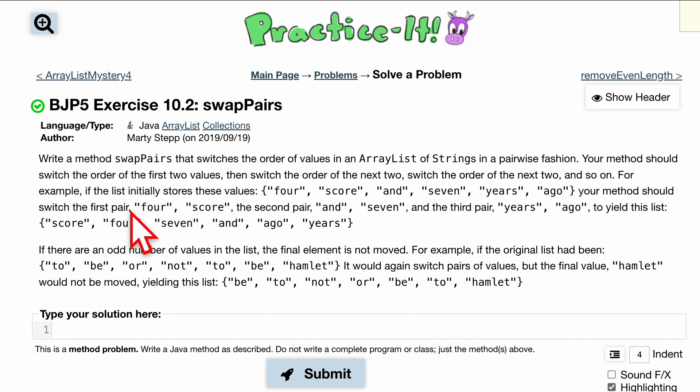To swap pairs, we want to write a method named swapPairs that switches the order of values in an ArrayList of Strings in a pairwise fashion. Our method should switch the order of the first two values, then the next two, and so on.